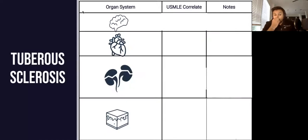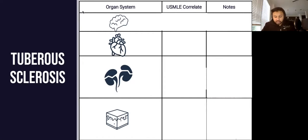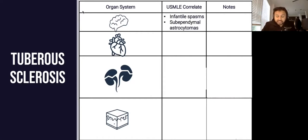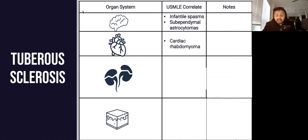I always like to compare and contrast neurofibromatosis with tuberous sclerosis. In tuberous sclerosis, these patients have seizures — specifically infantile spasms. They're going to be spasming a lot. And they can have cardiac abnormalities known as cardiac rhabdomyomas.